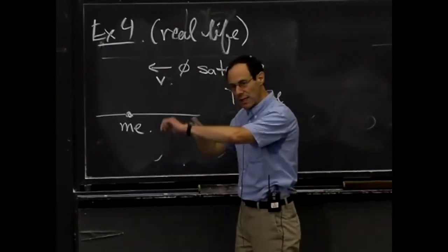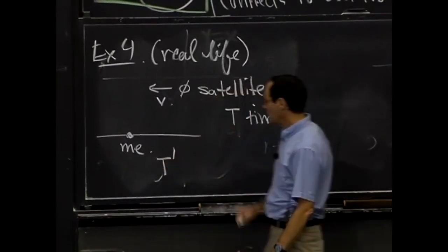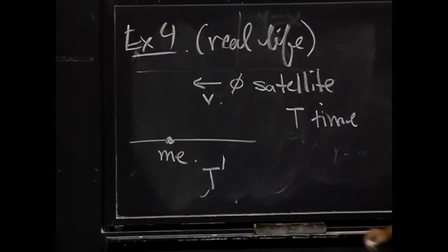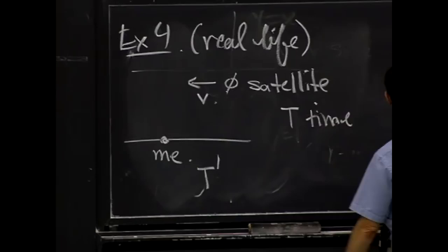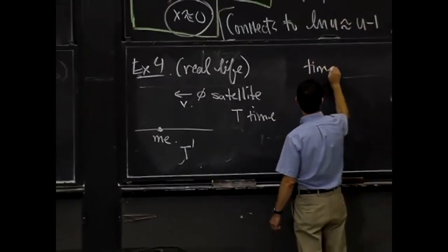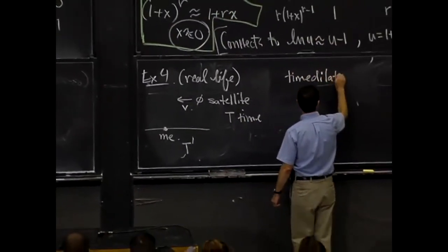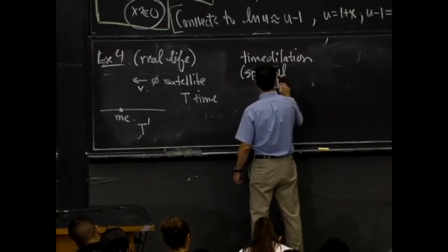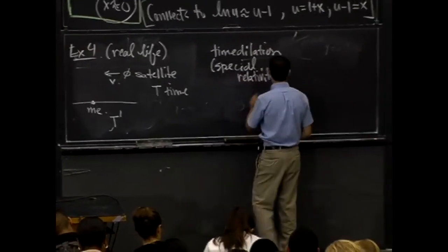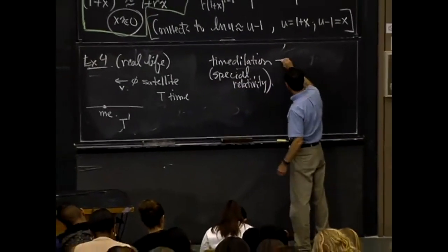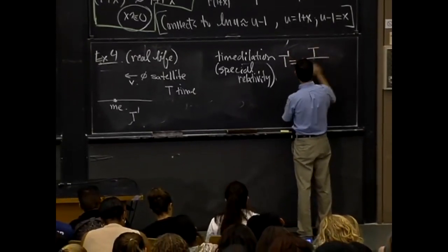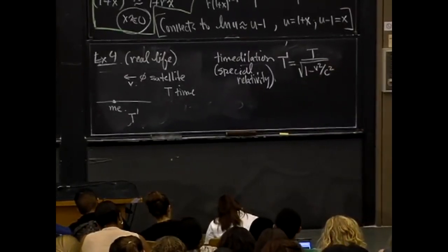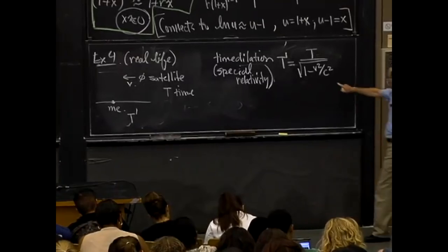But I have a watch. In fact, it's right here. And I have a time which I keep, which is t'. And there's an interesting relationship between t and t' which is called time dilation. And this is from special relativity. And it's the following formula. t' is equal to t divided by the square root of 1 minus v squared over c squared. Where v is the velocity of the satellite. And c is the speed of light.